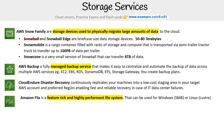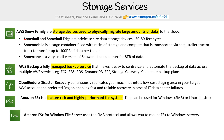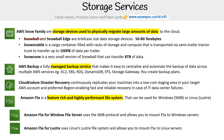We have Amazon FSx — a feature-rich and highly performant file system that can be used for Windows, using SMB protocol, or Linux, which uses Lustre. FSx for Windows File Server uses SMB protocol and allows you to mount FSx to Windows servers, while the Lustre version uses the Linux Lustre file system and allows you to mount FSx to Linux servers.